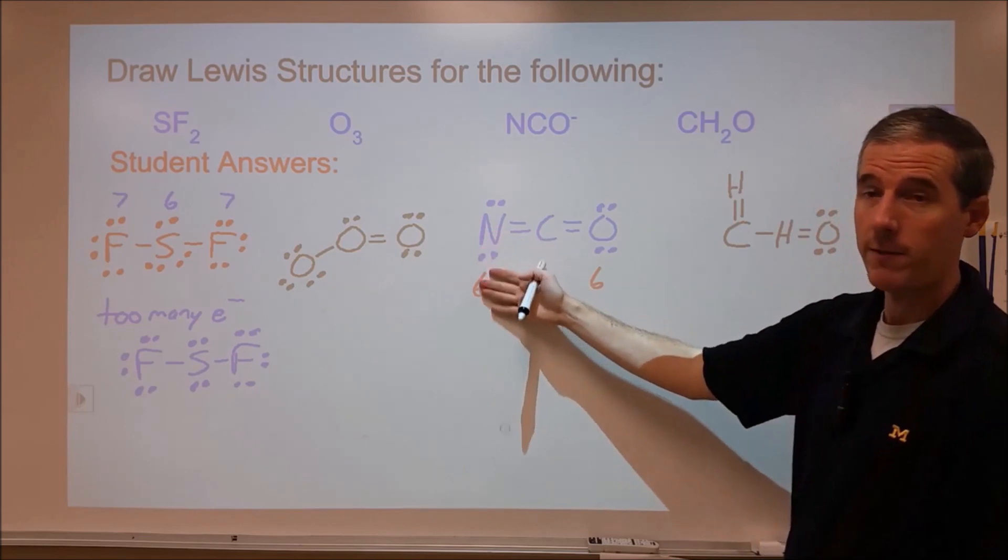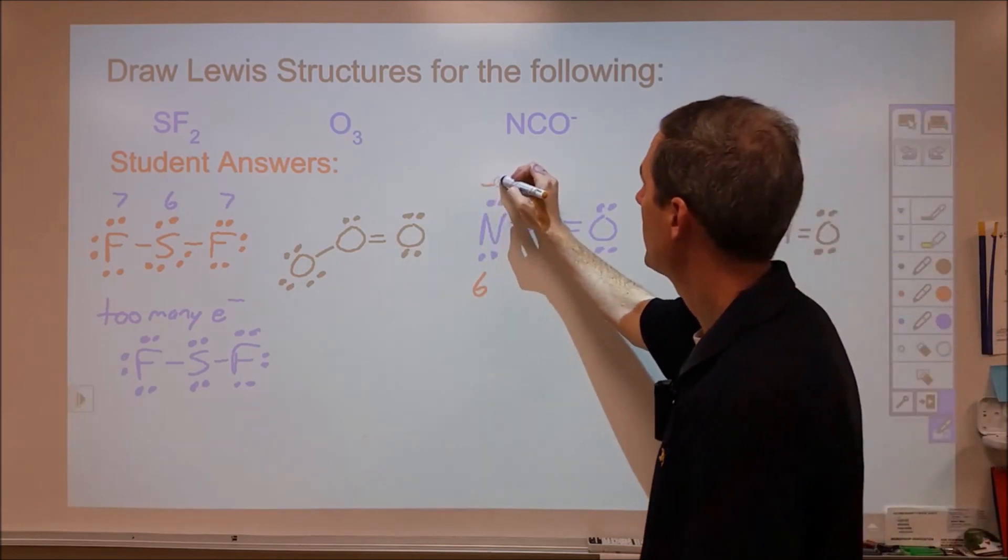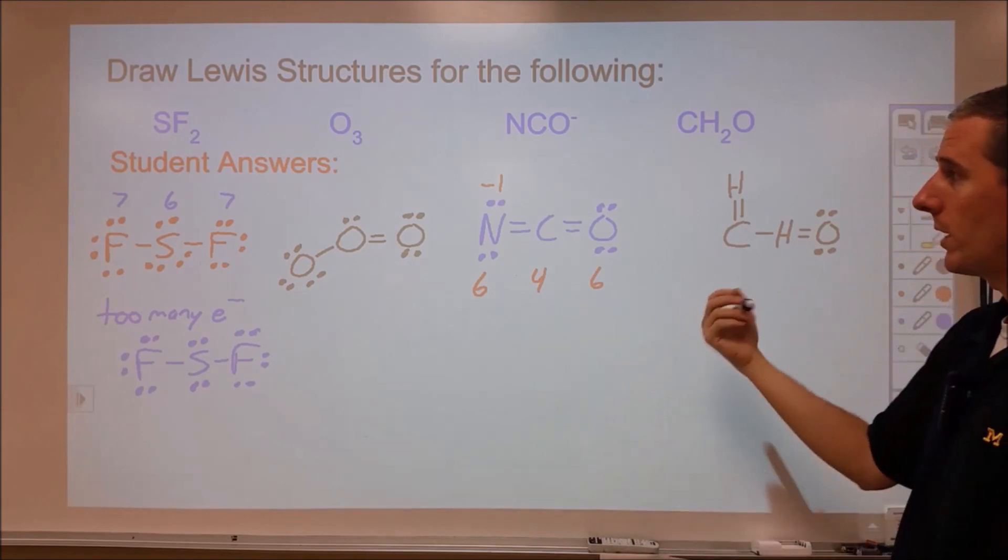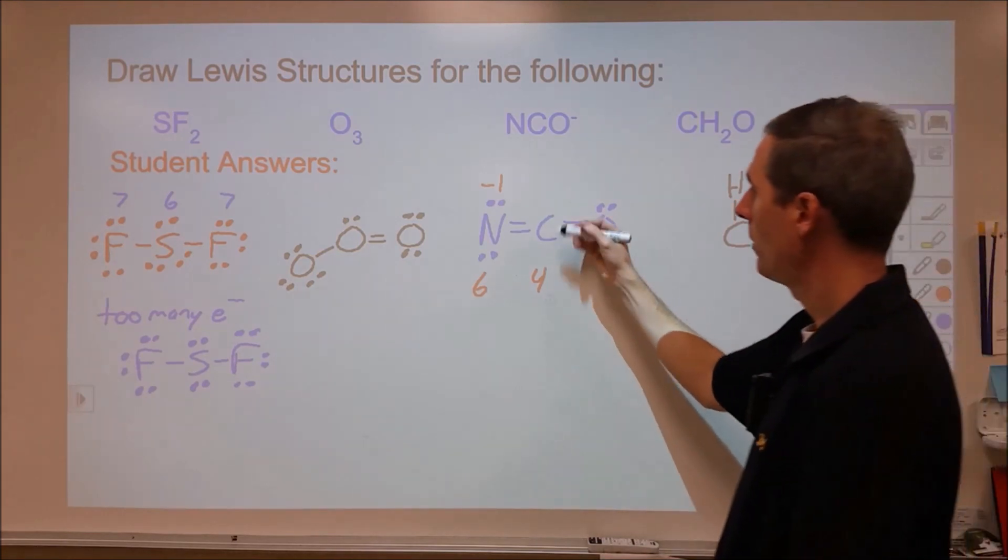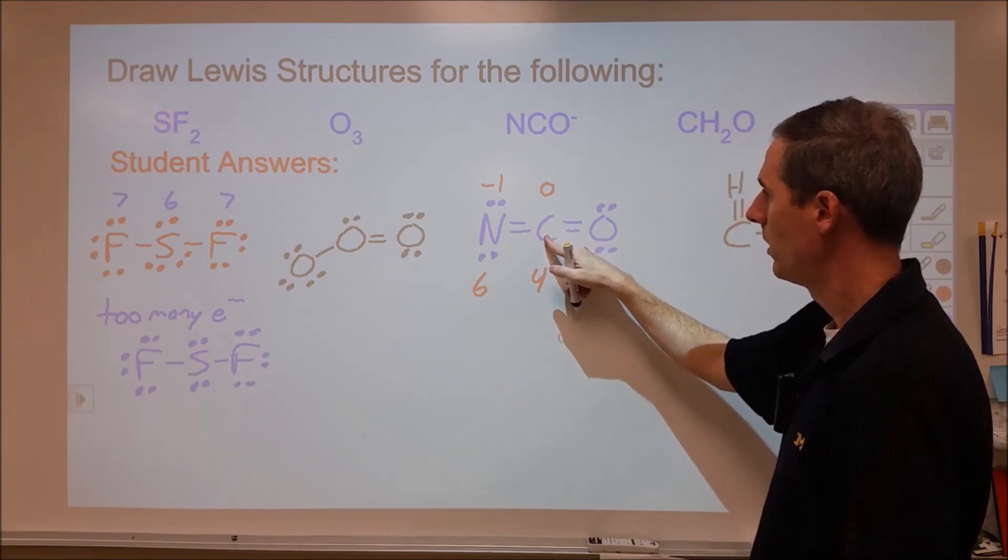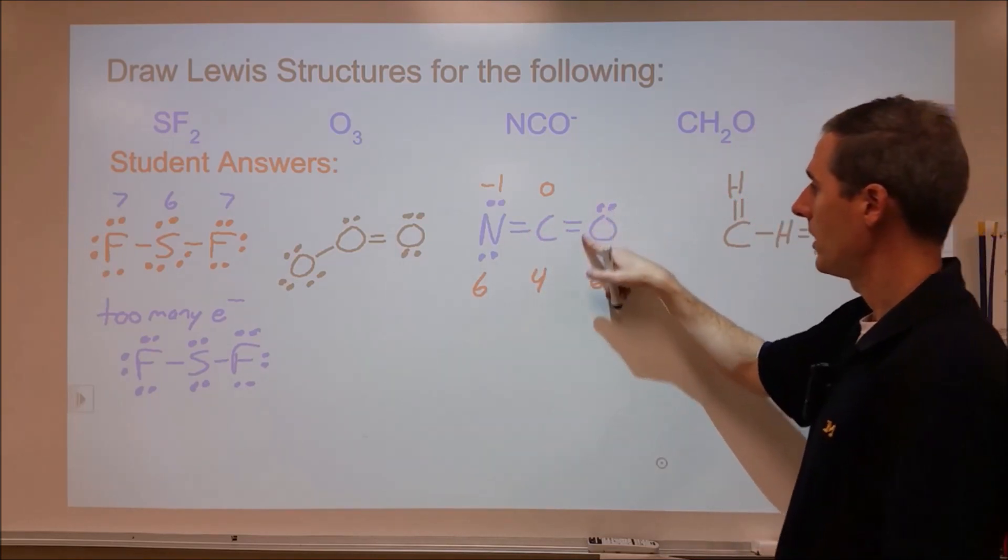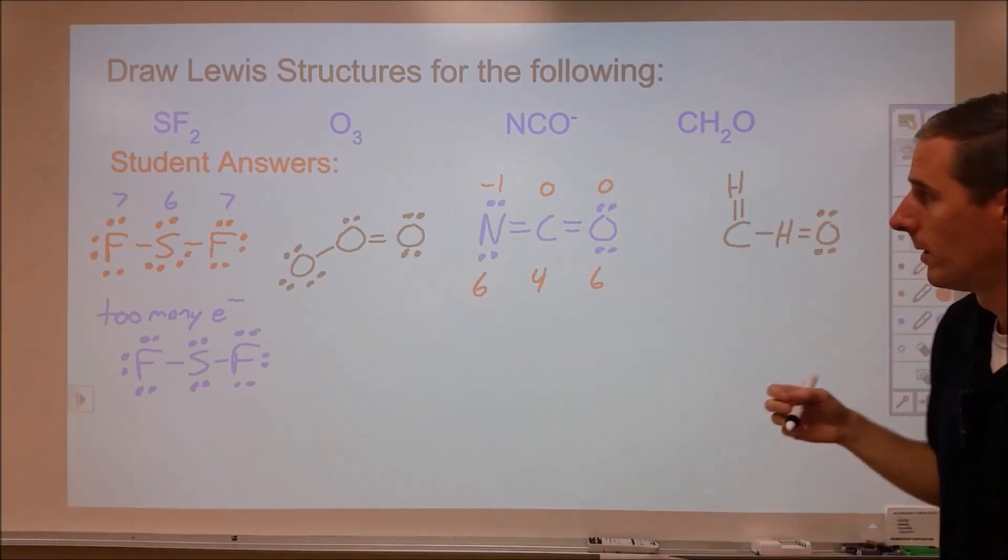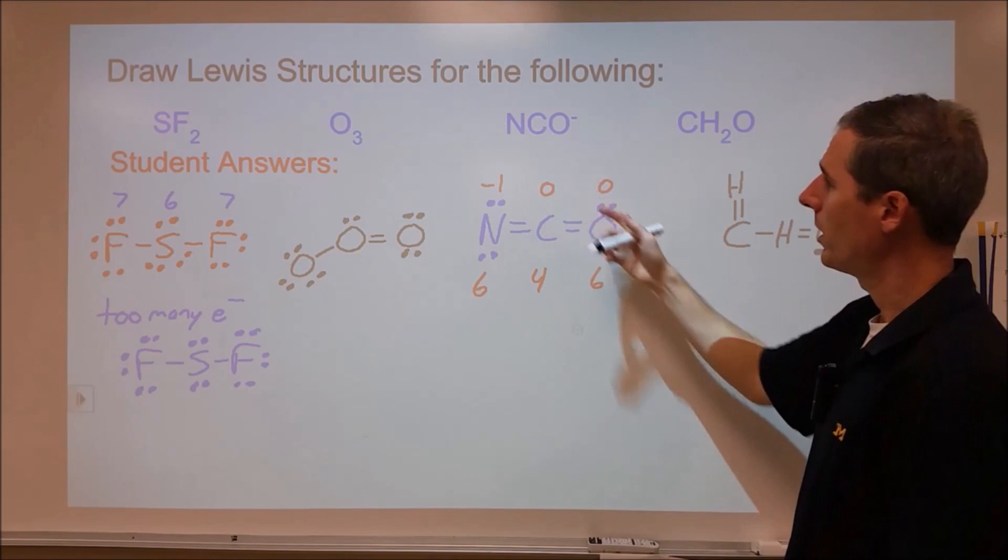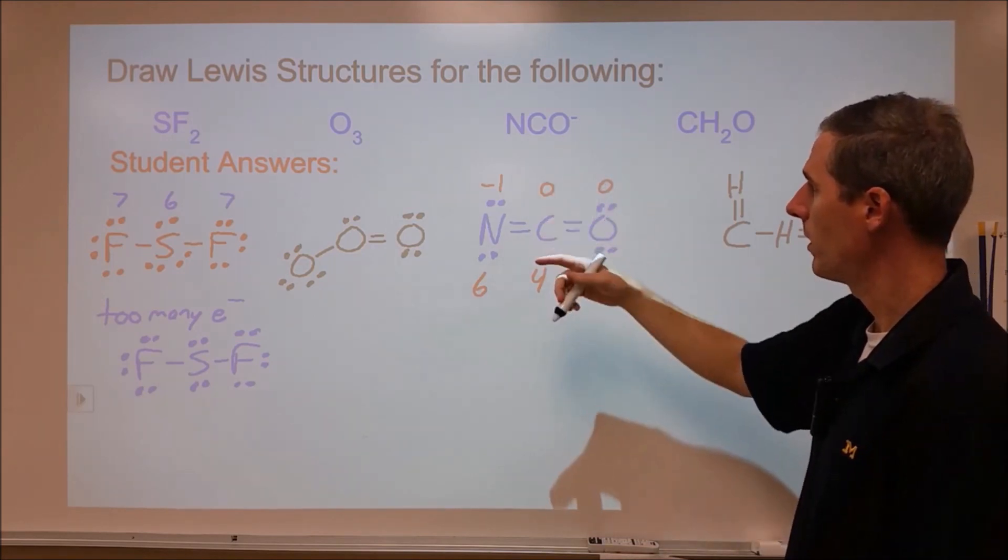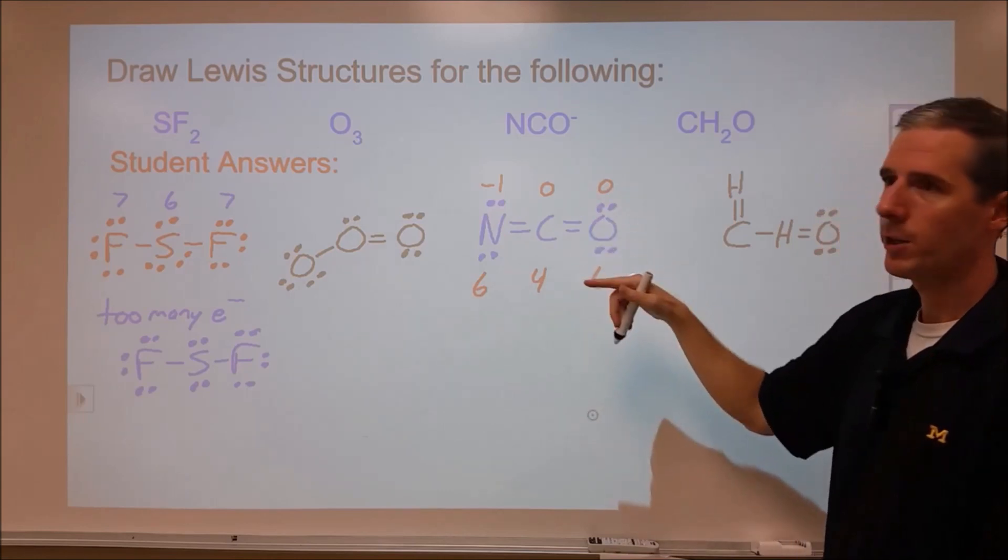Now, nitrogen normally only has five valence electrons, so that means that this has a negative one formal charge. It has one more electron assigned to it than it should have. The carbon here has a zero formal charge, because it has four electrons assigned to it, and it should have four valence electrons. Oxygen has six valence electrons assigned to it, and therefore it has zero formal charge. The sum of the formal charges will give you the actual charge of the molecular ion, in this case it's minus one, if we've counted our electrons correctly.